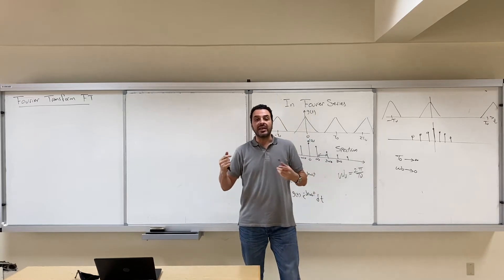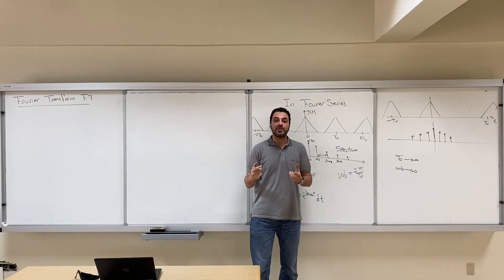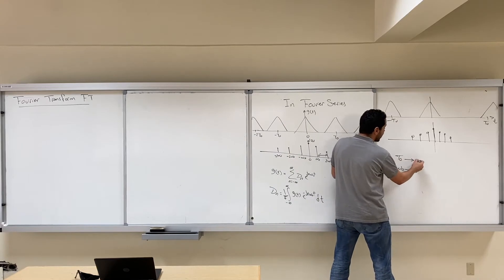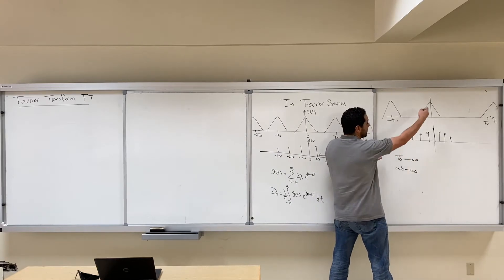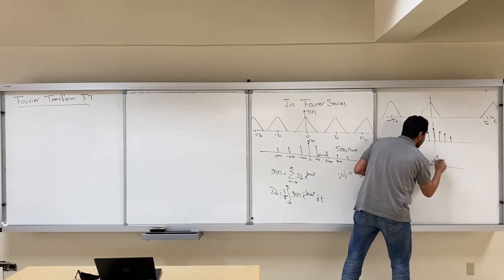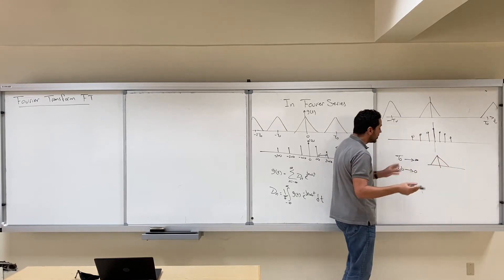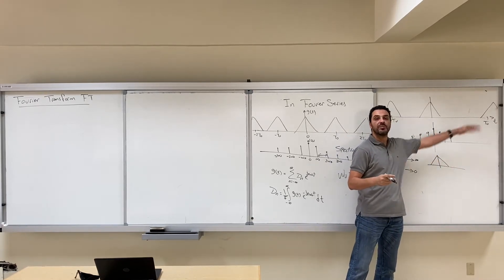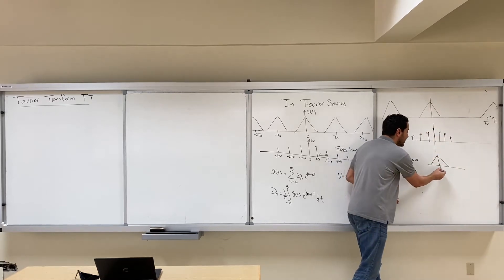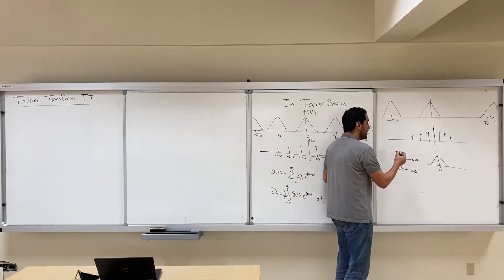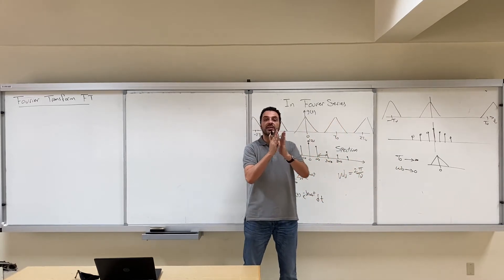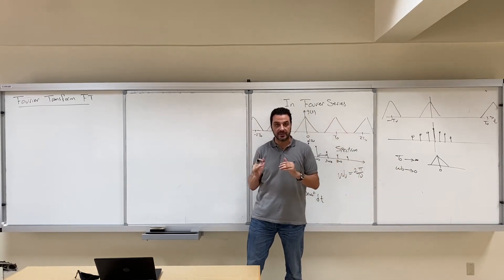This is exactly what happens when we talk about aperiodic signals. Aperiodic signals are basically when T₀, the period, goes to infinity — this gives us an aperiodic signal, a signal that doesn't repeat, because the next repetition would be at infinity. So the signal will not repeat, and the harmonics will be continuous, giving us a continuous spectrum.